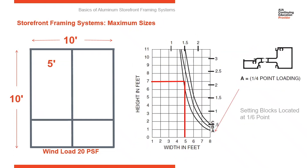Now, the next thing you want to check is dead load — you always want to check that. This is a pretty big line of glass here. Going to our dead load chart, we've got a line of glass that's five foot wide and seven foot tall. Looking at where those two lines meet on our chart, that's telling us we have to move our setting block to six point. So we're beyond the quarter point setting. You can see where the intersection of the line is to the right of the curve representing quarter point. So we need to move our setting blocks to six point.